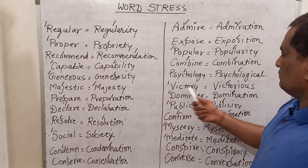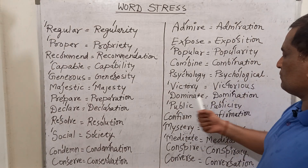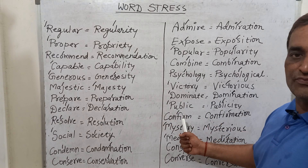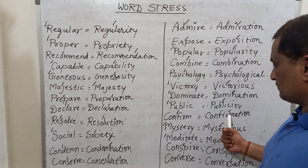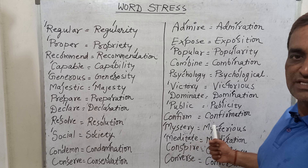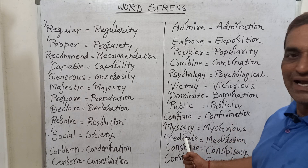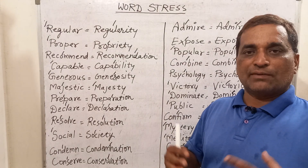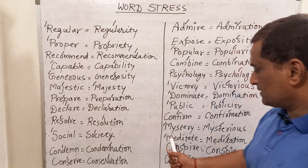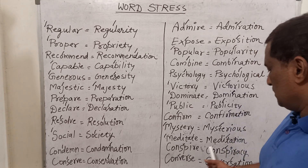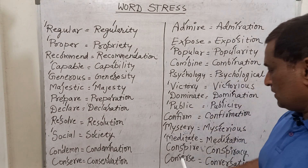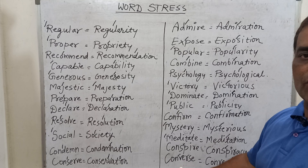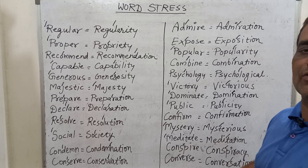You may also pronounce: victory, victorious, dominate, domination, public, publicity, confirm, confirmation, mystery, mysterious. For 'meditate' — meditate means to contemplate, to do chintan — and meditation, the stress will come before T. Conspire, conspiracy, converse, and conversation.